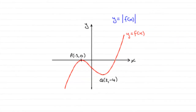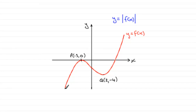For this part of the question, we're given the graph of y equals f of x and asked to sketch the graph y equals the mod of f of x. What happens is that all the y values that are negative — that's the points below the x-axis on the graph of y equals f of x.